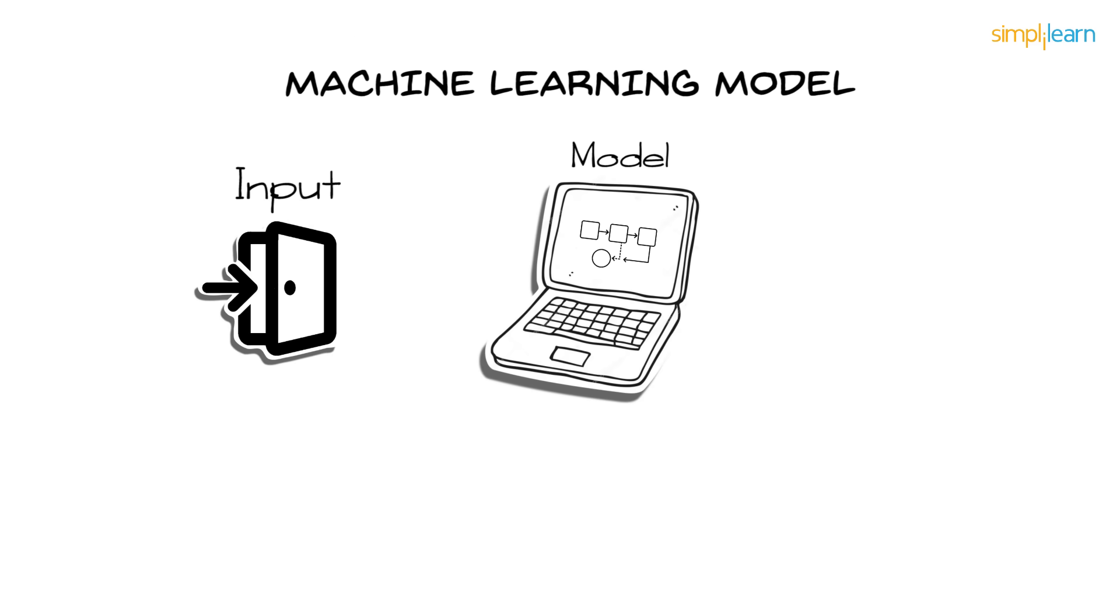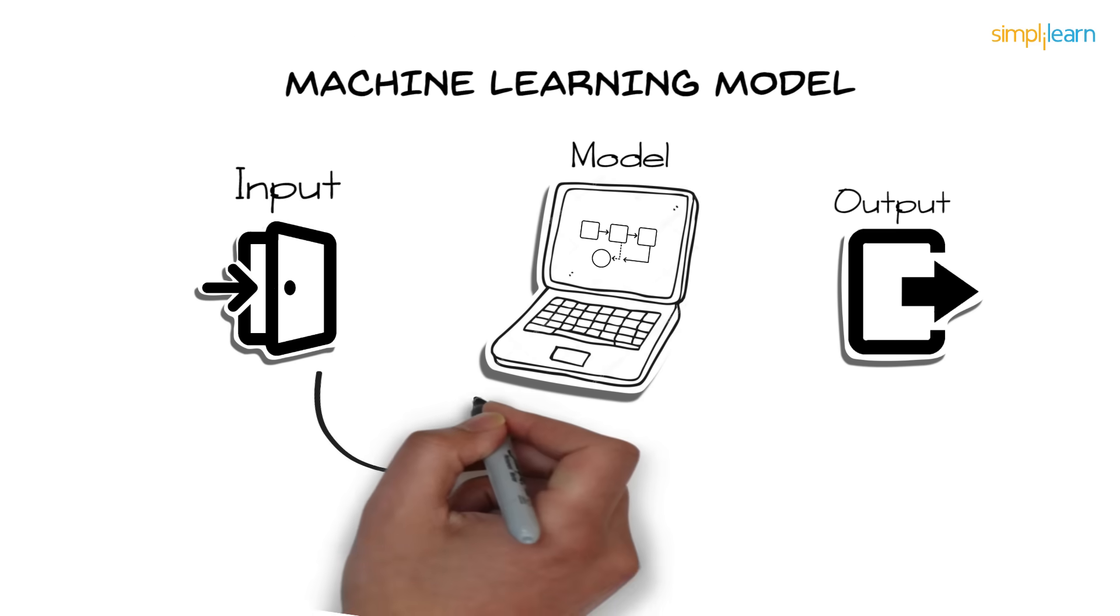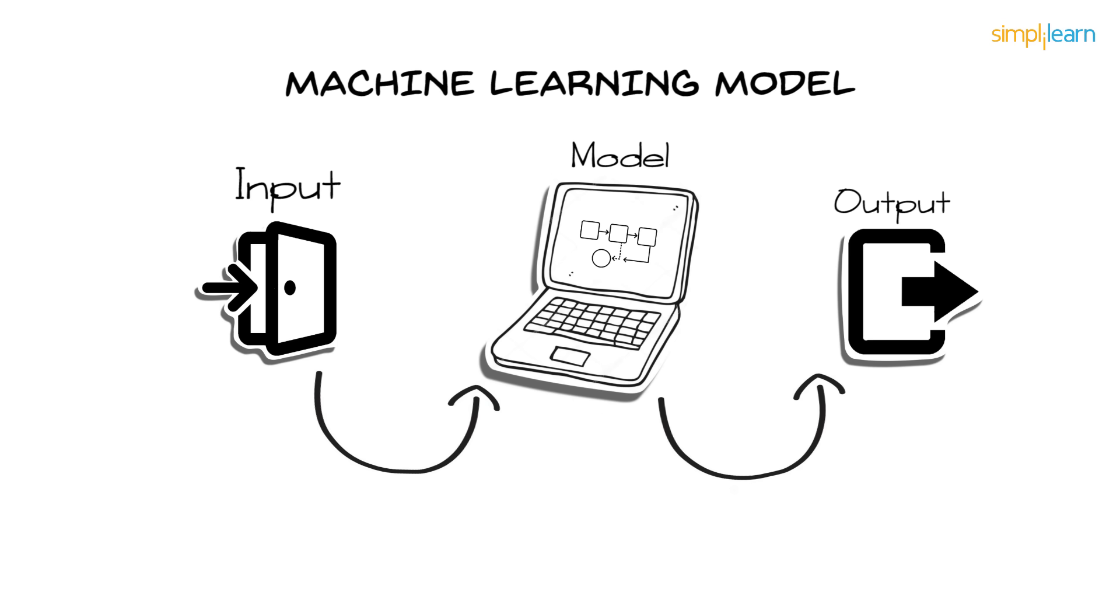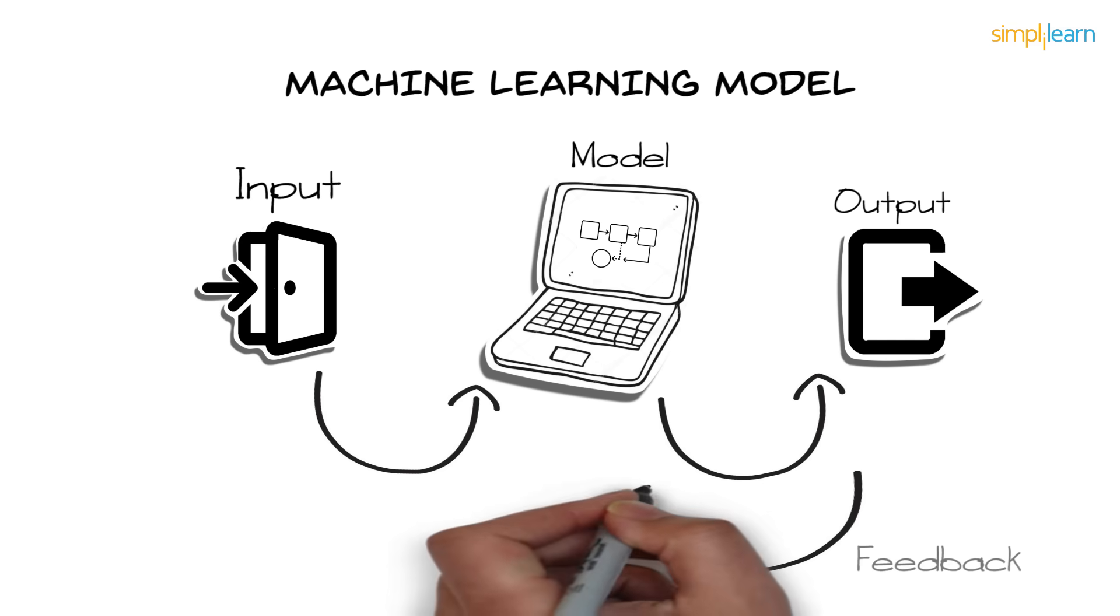To generalize machine learning model, let's see a flowchart. Input is given to a machine learning model, which then gives the output according to the algorithm applied. If it's right, we take the output as a final result. Else, we provide feedback to the training model and ask it to predict until it learns. I hope you've understood supervised and unsupervised learning.